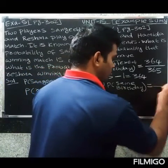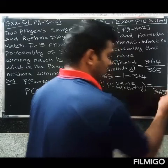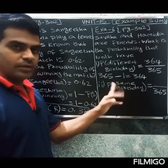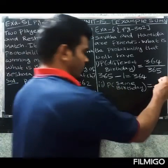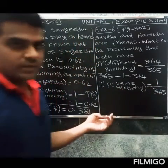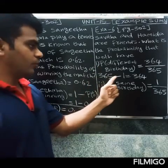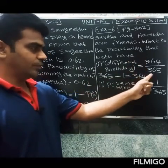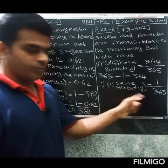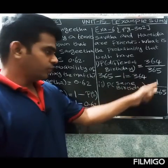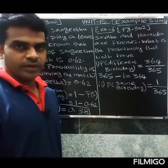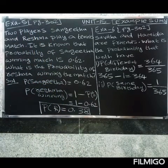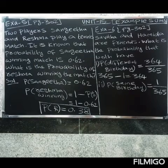Total possibilities equal 365. The probability of the same birthday is 1 by 365, and the probability of a different birthday is 364 by 365.